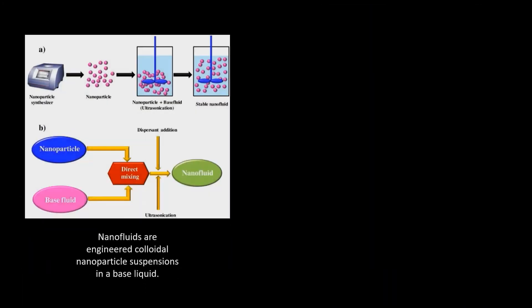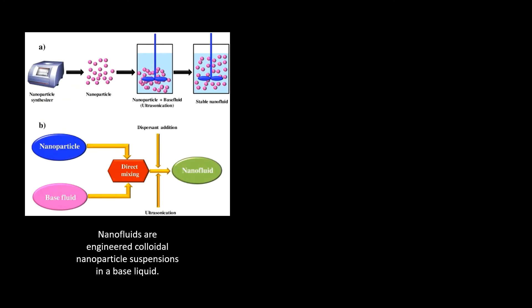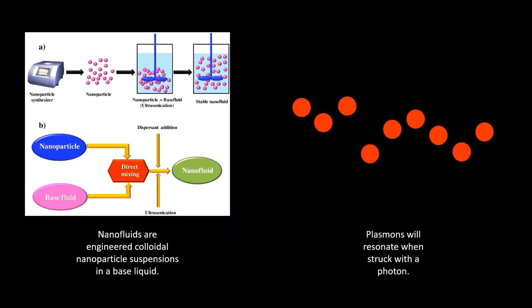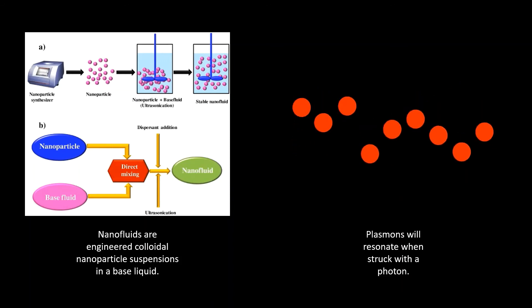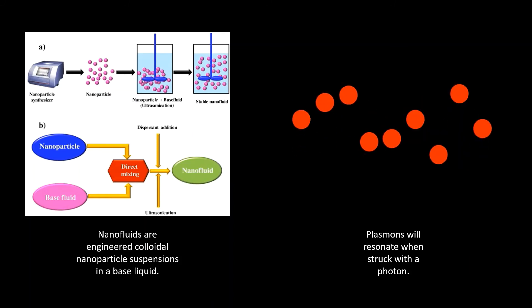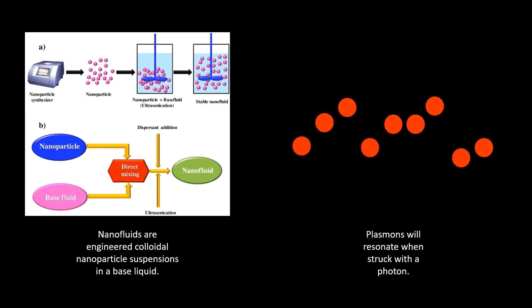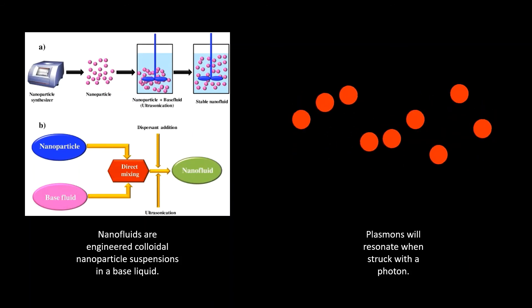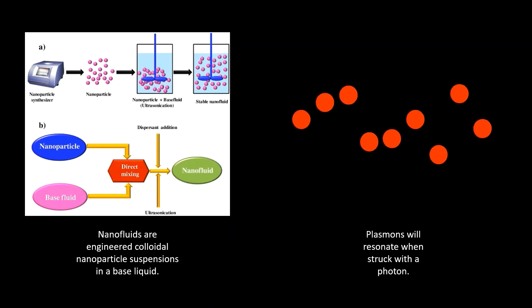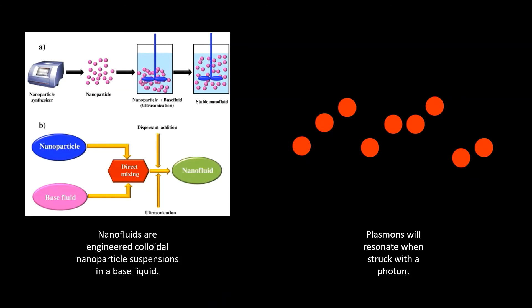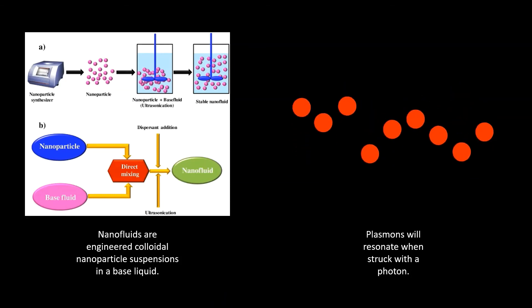Nanofluids are nanoparticles suspended in a fluid. Optical nanofluids are normally made of metallic nanoparticles that experience a phenomenon known as plasmon resonance. A plasmon is the cloud of free electrons in a metal. When a light photon strikes a nanoparticle, the plasmon will oscillate at a certain frequency. As mentioned previously in this video, by changing the nanoparticle size, we can change the energy levels at which the plasmon resonates.